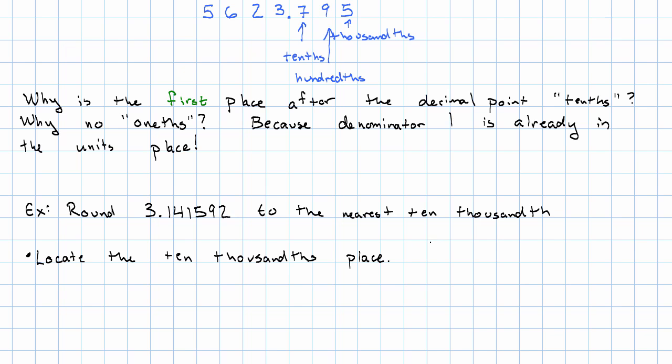We could do that by reading off the names of the places, but I think that it's easier to do by looking at the fraction. One ten thousandths has four zeros, and therefore, it's going to be in the fourth place after the decimal point. So the ten thousandths place, that's where that five is.